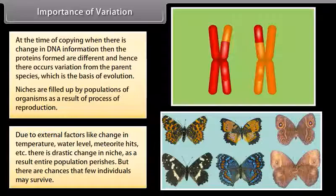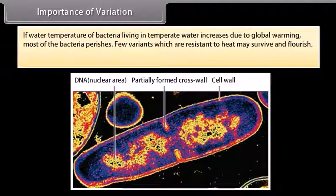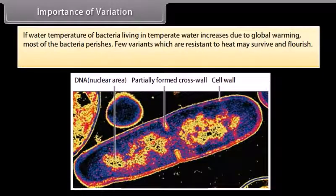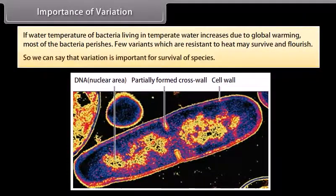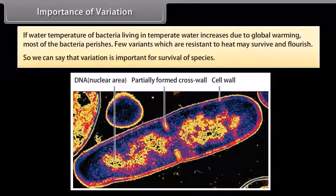We can understand the above discussion with the help of an example. If the water temperature of bacteria living in temperate water increases due to global warming, most of the bacteria perish. A few variants which are resistant to heat may survive and flourish. So we can say that variation is important for the survival of species.